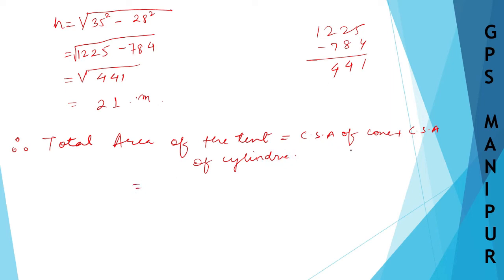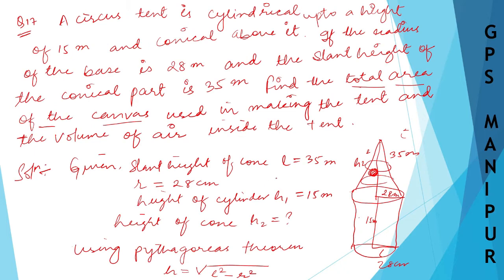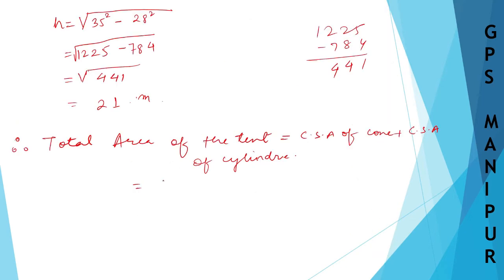Curved surface area of a cone is πrL, and curved surface area of a cylinder is 2πrH. Here H is H1 for the cylinder. Taking π and r as common factors, what is left is L + 2H1.